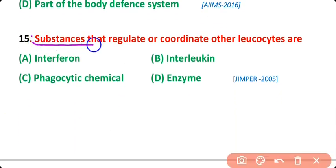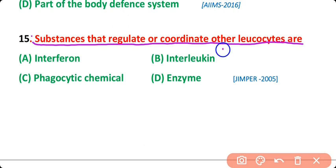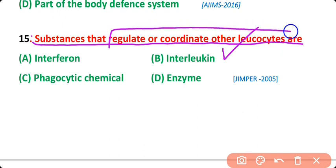Question number 15: The substances that regulate or coordinate other leukocytes are interferon, interleukin, phagocytic chemicals, or enzymes? The correct answer is option B. Interleukins are the substances that stimulate or coordinate other leukocytes to produce immunity.